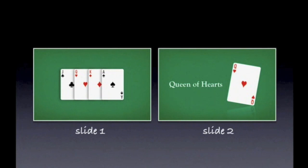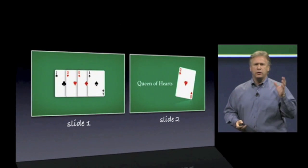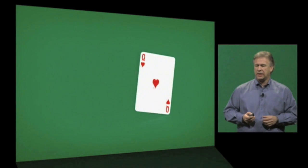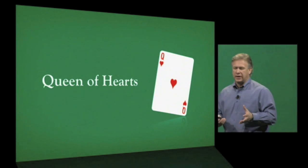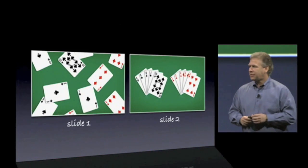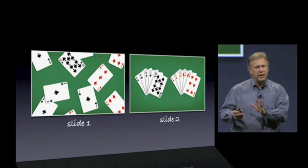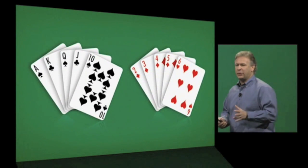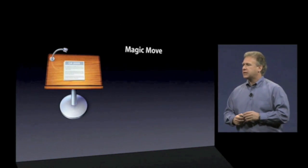For example, let's say this is your first slide — you've got a bunch of cards on it. To make a second slide, you move a bunch of cards off, take the Queen of Hearts, make it bigger, tilt it on an angle, create a reflection, set it up the way you want, and then use Magic Move and Keynote will do the transition for you. Here's the first slide and now the second slide — that animation is done by Keynote. It's really simple, really powerful.